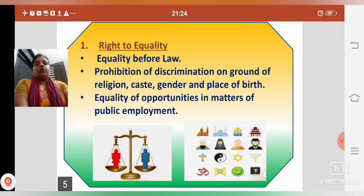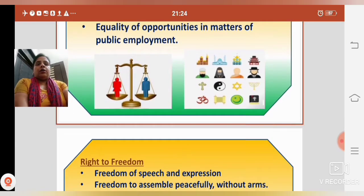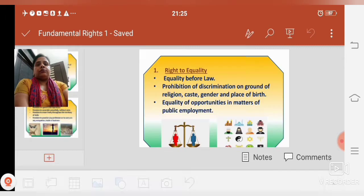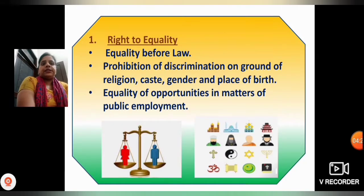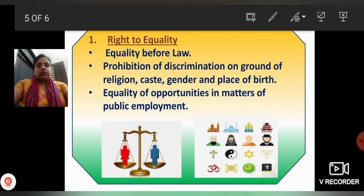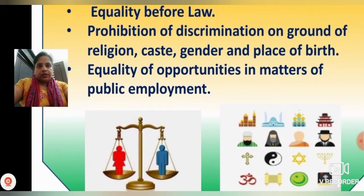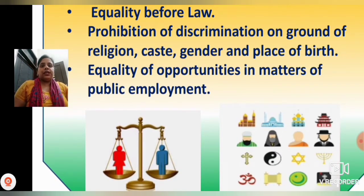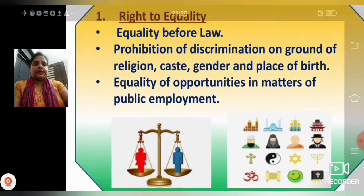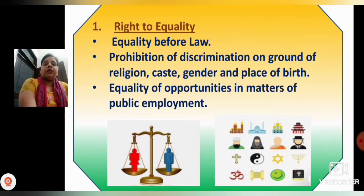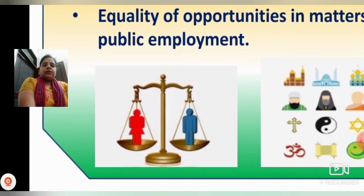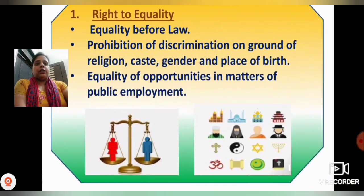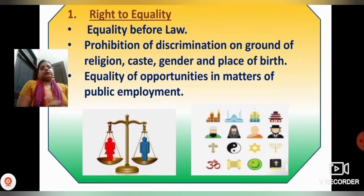You are watching a picture of a measurement scale — a balance — which is equal on both sides. So Right to Equality says: equality before law — kanun ke saamne samanata — kanun ke saamne sabhi saman hain. Whether she is a girl or he is a boy, both are equal before law. Whether a person belongs to the Sikh religion or the Hindu religion, they both are equal before law.